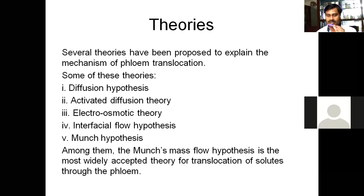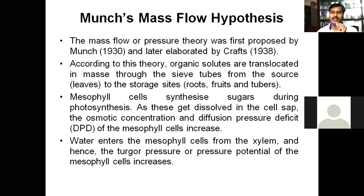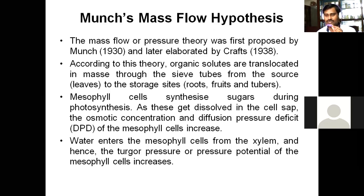The Munch mass flow hypothesis explains the mechanism of translocation of organic solutes through the phloem. It is also called pressure flow theory and was proposed by Munch in 1930, later elaborated and revisited by Kraft in 1938. According to this theory, organic solutes are translocated in the plant from source to the sink — that is, to the storage region or storage organ where food is required.